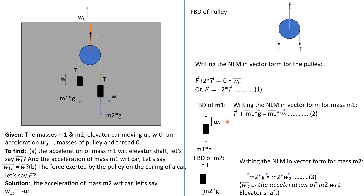Now we will consider the free body diagram of mass M1. The tension force T is acting in the upward direction. W1 is the acceleration of mass M1 with respect to the elevator shaft, that is with respect to the ground, and M1g is the gravitational force on mass M1. Writing the equation of motion in vector form for mass M1: T plus M1g equals M1 times W1. This is equation 2.